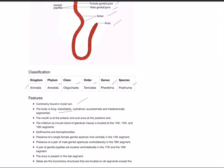Triploblastic means three layers are present in the embryo: ecto, endo, and meso. The body is cylindrical, eucoelomate, meaning truly coelomate, and metamerically segmented, meaning the body is divisible into segments. The mouth is at the anterior end and anus is at the posterior end. The clitellum is a circular band of glandular tissue located in the 14th, 15th, and 16th segments.